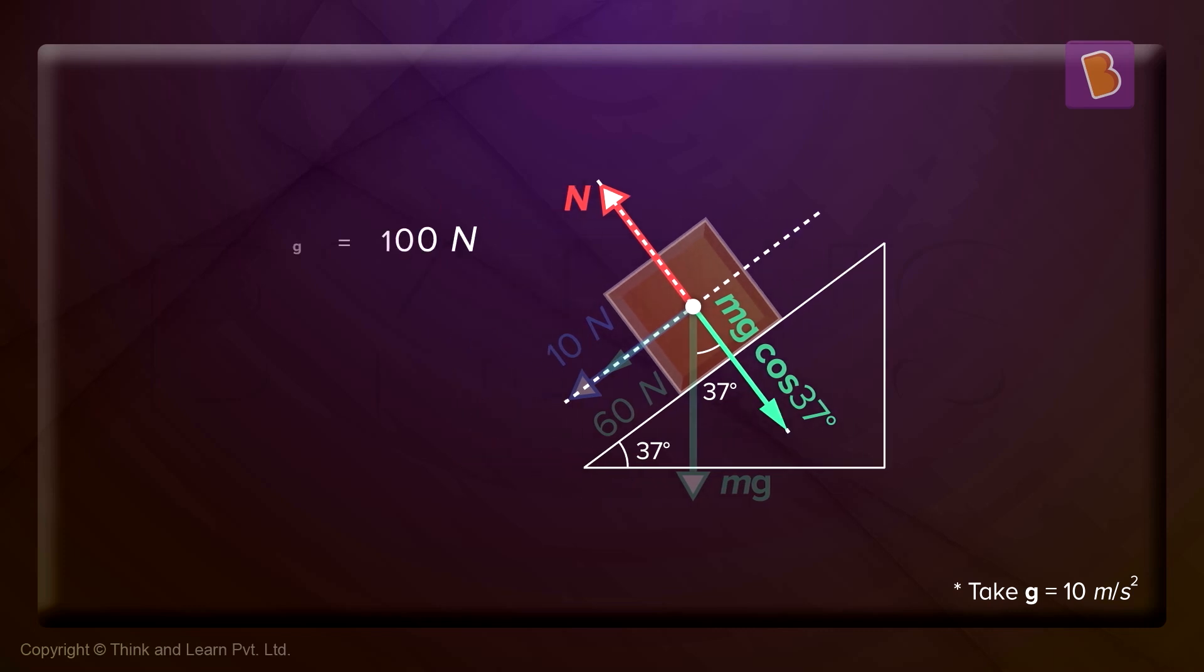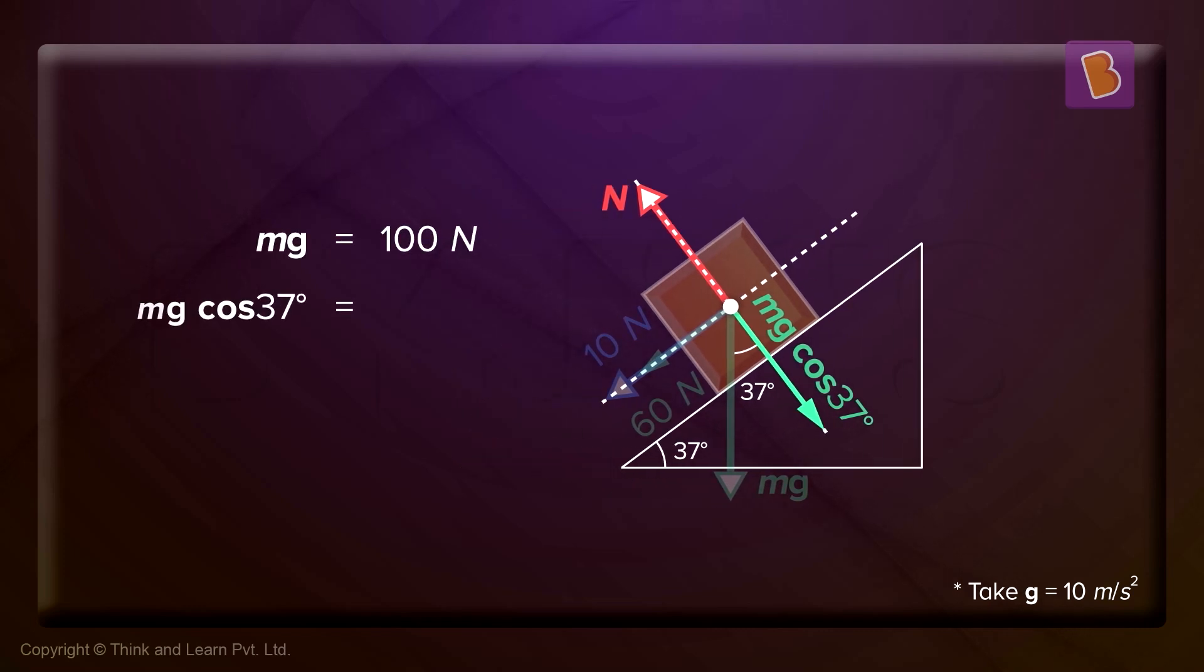That is MG cos 37. Now, MG, you know the value of MG is 100 and MG cos 37 will become how much? Yes, 80 Newtons.